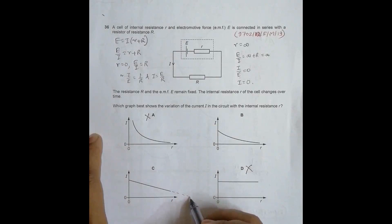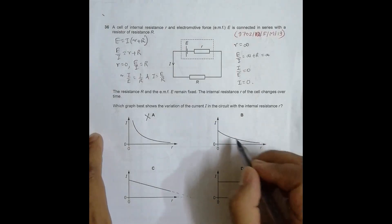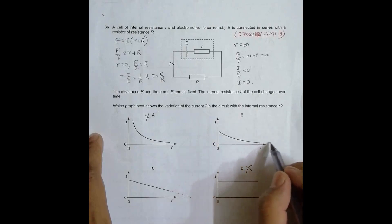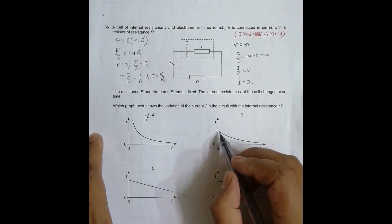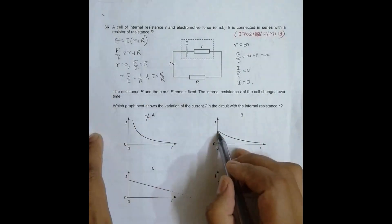When r has a different value, I becomes 0. But here, if I look at this graph, when r becomes infinite, there's a chance that this I is becoming 0.